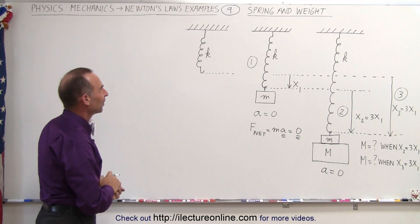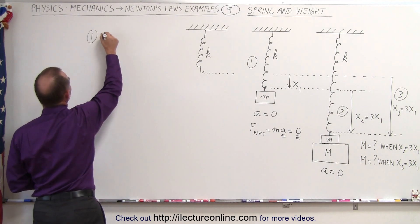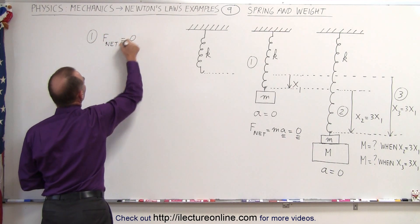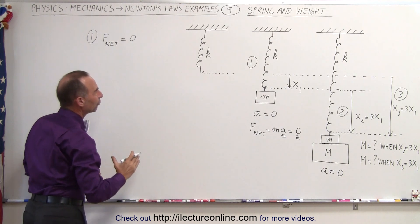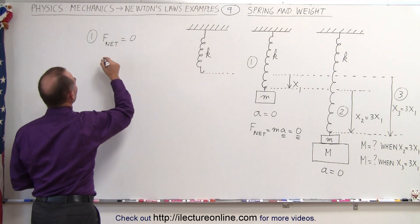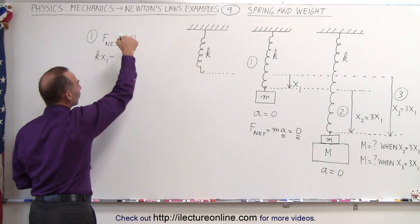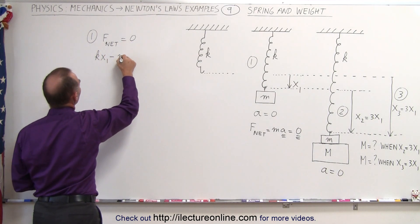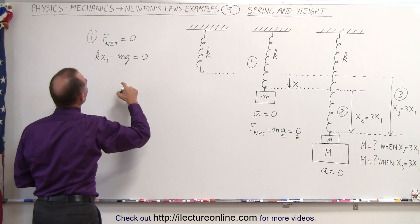Let's start with number one. We can say that F net is going to be equal to zero, and so all the forces pulling up will be the force of the spring, which will be k times x1, and all the forces pulling down will be the weight of the block mg, and that will equal zero.